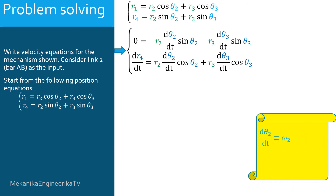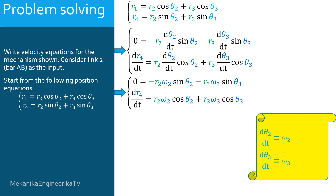We denote d theta 2/dt as omega 2, the angular velocity of link 2, and d theta 3/dt as omega 3, the angular velocity of link 3. Considering these notations, the first equation writes: 0 = minus R2 times omega 2 times sine theta 2, minus R3 times omega 3 times sine theta 3. And the second equation writes: d R4/dt = R2 times omega 2 times cosine theta 2, plus R3 times omega 3 times cosine theta 3.